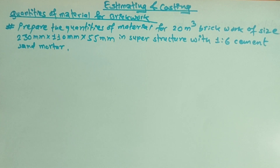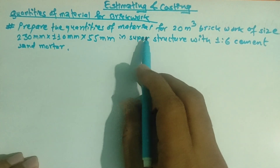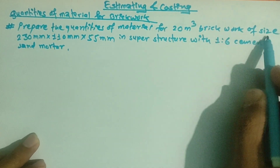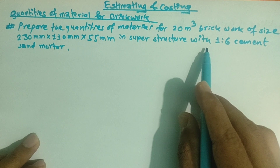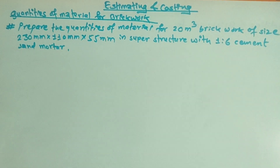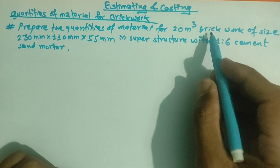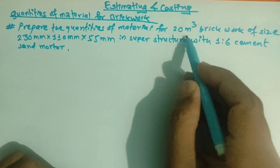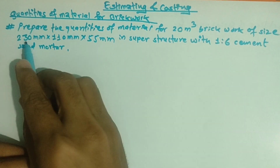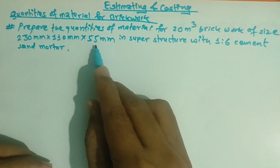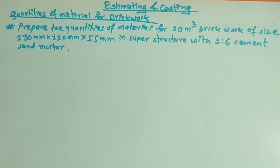This is a question of how to prepare the quantities of materials for 20 m³ brickwork of size 230 mm x 110 mm x 55 mm in superstructure with 1:6 cement-sand mortar.